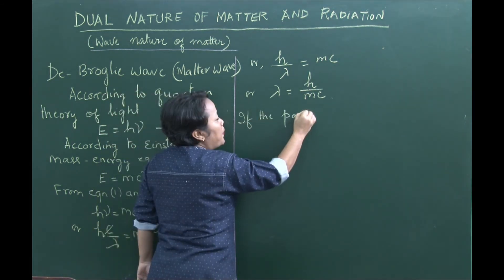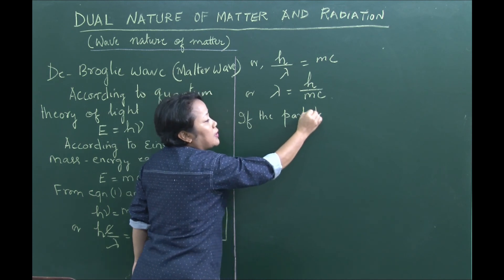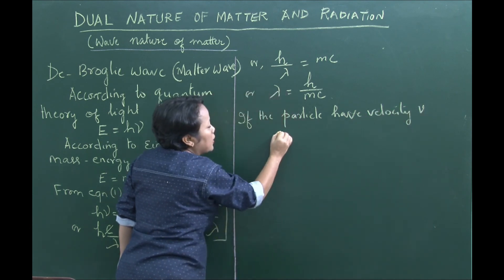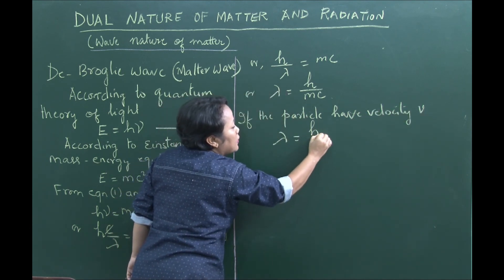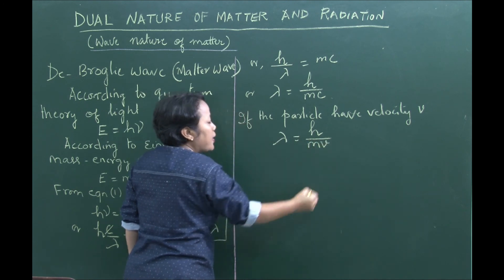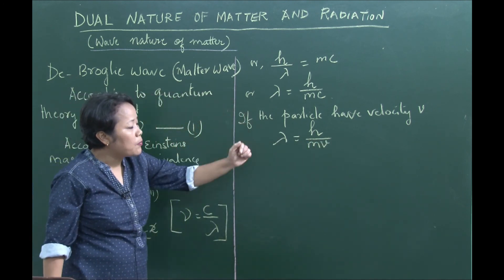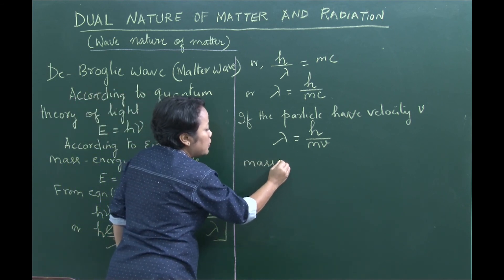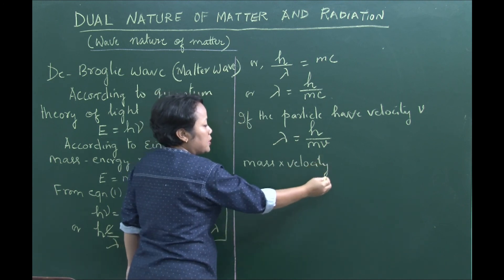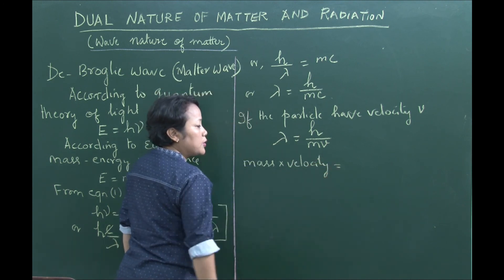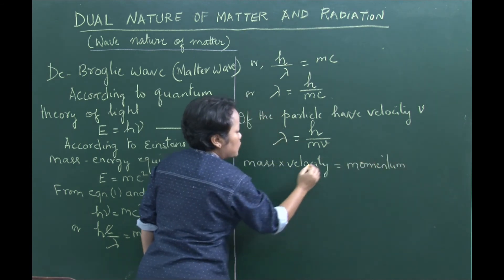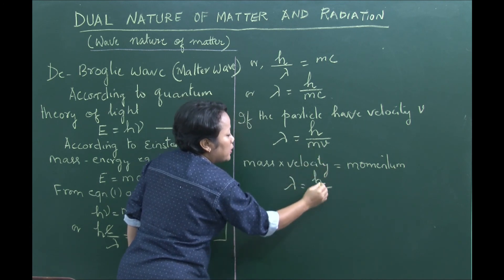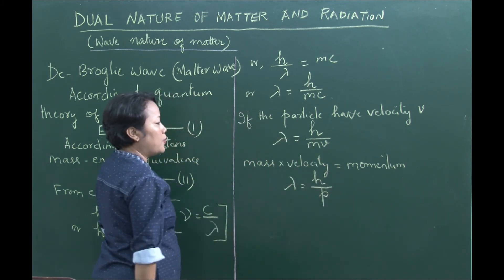If the particle has a velocity V instead of the speed of light c, then the wavelength becomes λ = h/mv. Here mass multiplied by velocity is momentum. So λ = h/(mv), where mv is the momentum, denoted by the small letter p.